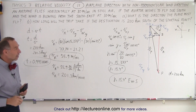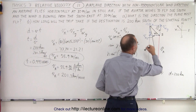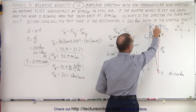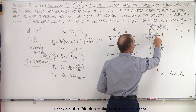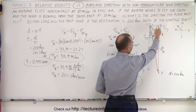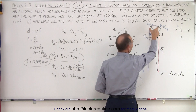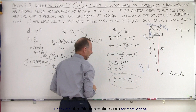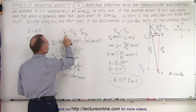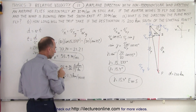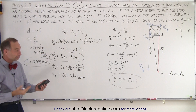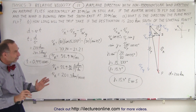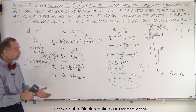That's how we do relative velocities. The key is always to draw a vector diagram representing the velocities, then find the x and y components of each. In the x-direction, since the plane wants to fly due south, those two components must be equal — that lets you find gamma. Once you have gamma, you do a component addition in the y-direction to get the resultant velocity, and out pops the final answer.